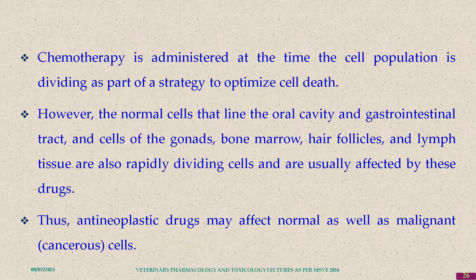Chemotherapy is administered when the cell population is dividing to optimize cell death. However, normal cell lines of the oral cavity also divide every day, and antineoplastic drugs act on them too. The gastrointestinal tract regenerates hundreds of thousands of cells daily. Bone marrow, hair follicles, lymph tissues, and reproductive cells including spermatogenesis and oogenesis are all rapidly dividing cells affected by the drug.